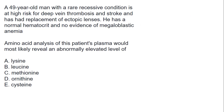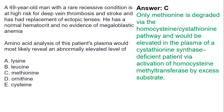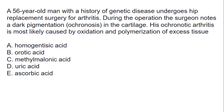The next question: a 49-year-old man with a rare recessive condition is at high risk for deep vein thrombosis and stroke and has had replacement of ectopic lenses. He has a normal hematocrit and no evidence of megaloblastic anemia. Amino acid analysis of this patient's plasma would most likely reveal an abnormally elevated level of which amino acid? The answer is methionine. Only methionine is degraded via the homocysteine pathway and would be elevated in the plasma of a cystathionine synthase-deficient patient, via accumulation through the homocysteine methyltransferase pathway from excess substrate.